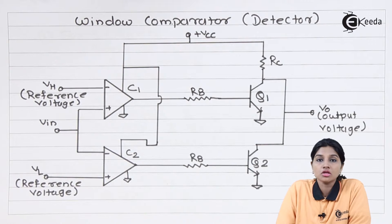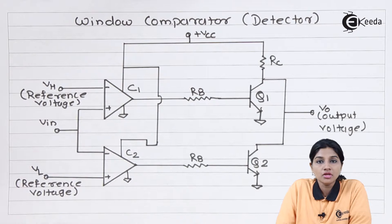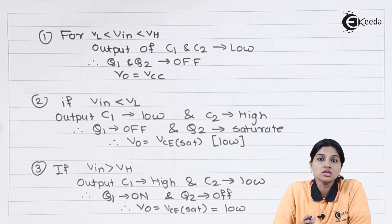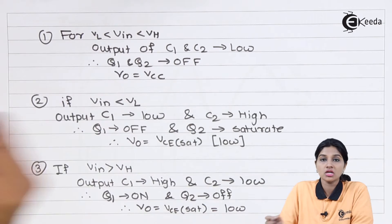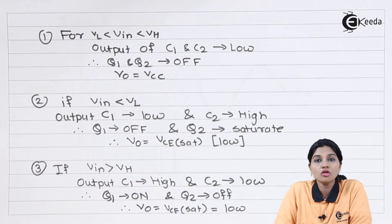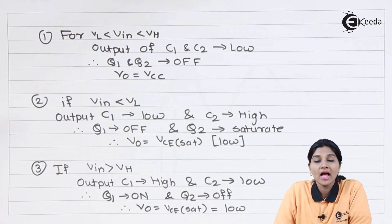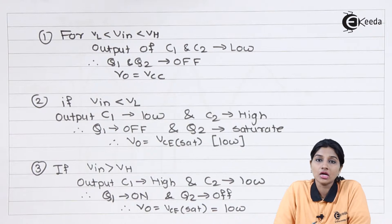To understand the operation we consider three cases: first, when V_in is between VH and VL; second, when V_in is less than VL; and third, when V_in is greater than VH. In the first case, when the input signal is greater than VL but less than VH, both comparator outputs will be low. Because of the low output, transistors Q1 and Q2 will be in the off state, and therefore +VCC will appear at the collector of the transistors.